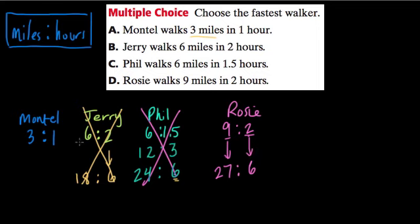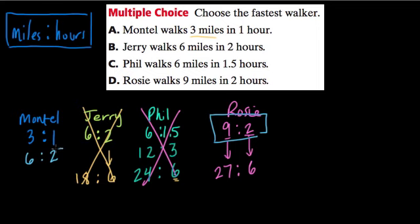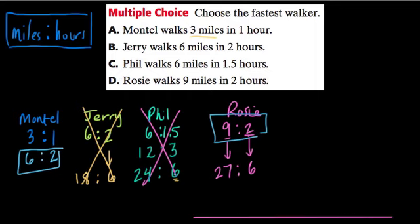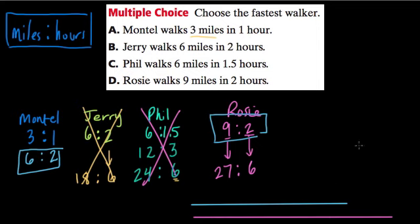Last, we compare Montel to Rosie. If I double Montel's ratio, it becomes two hours to six miles. Rosie in two hours walks nine miles, whereas Montel can only walk six miles in that same time — you can almost picture them side by side. So Rosie is faster than Montel too, and the fastest walker is Rosie, choice D. Hope that helped!